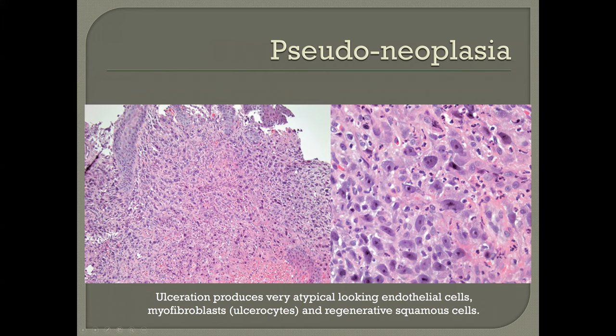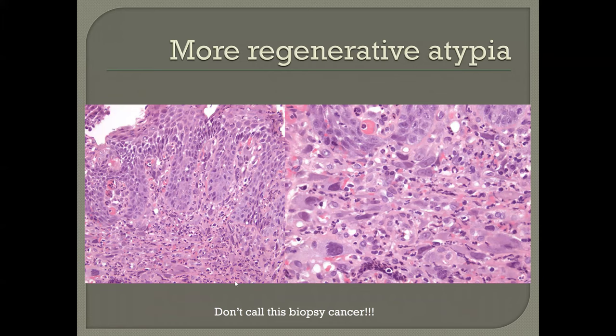At higher magnification, you can see an even greater degree of pleomorphism and associated inflammatory atypia of the squamous epithelium. This is a pitfall, so you have to be very cautious in determining whether or not this is cancer. If you need to perform immunohistochemical stains for cytokeratins or vascular markers to feel confident in your decision, we certainly would endorse that.